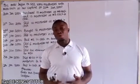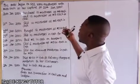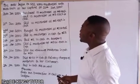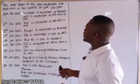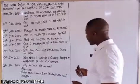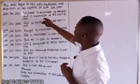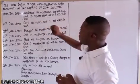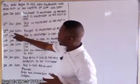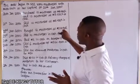The question says: Mrs. Peter began to sell Verno mattresses with 500 naira cash as her capital on 20th January 2000. On 20th January 2000, she purchased 10 mattresses at 4 naira each and 10 mattresses at 3 naira each in cash. On 21st January 2000, sold 10 mattresses at 3 naira each in cash. On 22nd January 2000, bought 12 mattresses at 3 naira 50 kobo each.